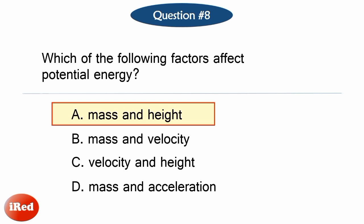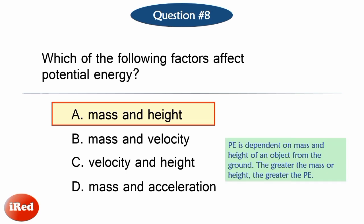The correct answer is Letter A. Potential energy is dependent on mass and height of an object above the ground. The greater the mass or height, the greater the potential energy.